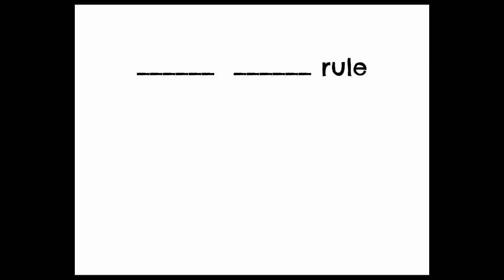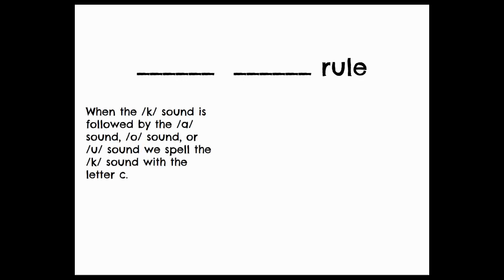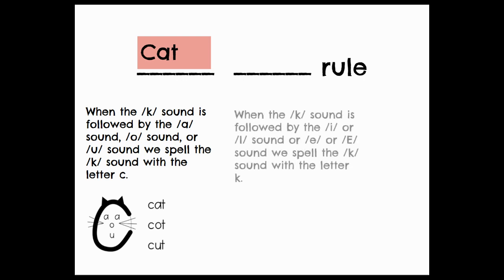Now, the last time we met, we talked about this cat blank rule. And we said today we would discover what that second word was. If you think back to Monday, we learned that when we hear K-A or K-A or K-A, that we have to spell that K sound with the letter C. I wonder what we're going to add today. Let's see.